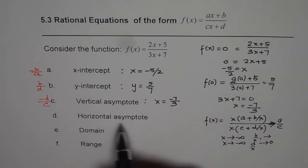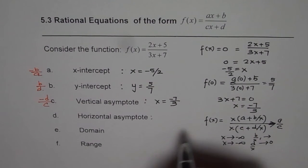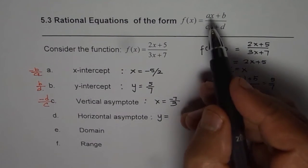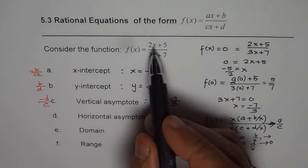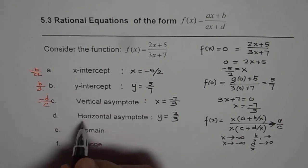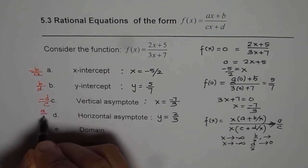We get a over c as our answer. So for horizontal asymptote, it's a horizontal line where f of x means y approaches. So y is equals to a over c. In our case, a is 2, c is 3. So we get 2 over 3. So we write horizontal asymptote for a function as ratio of leading coefficients, which is a over c.